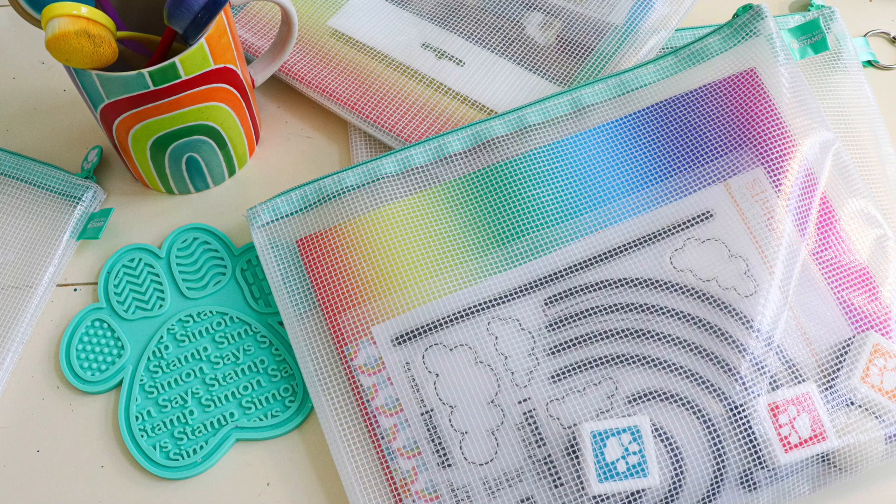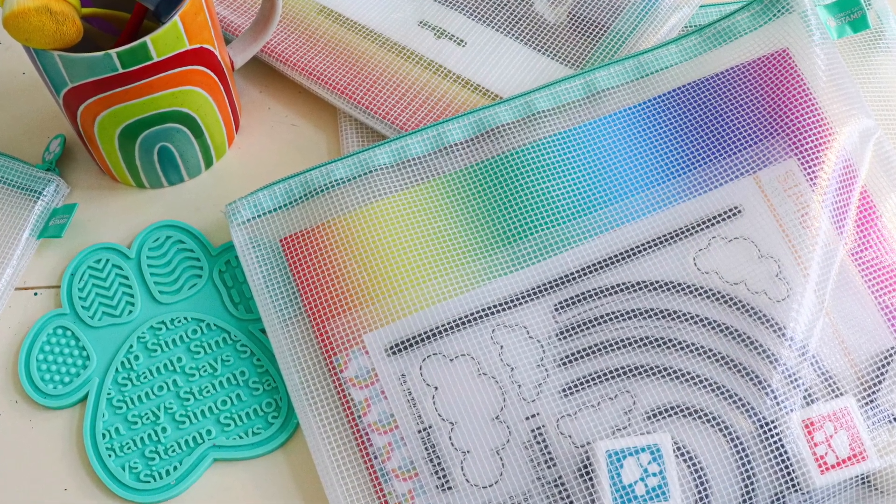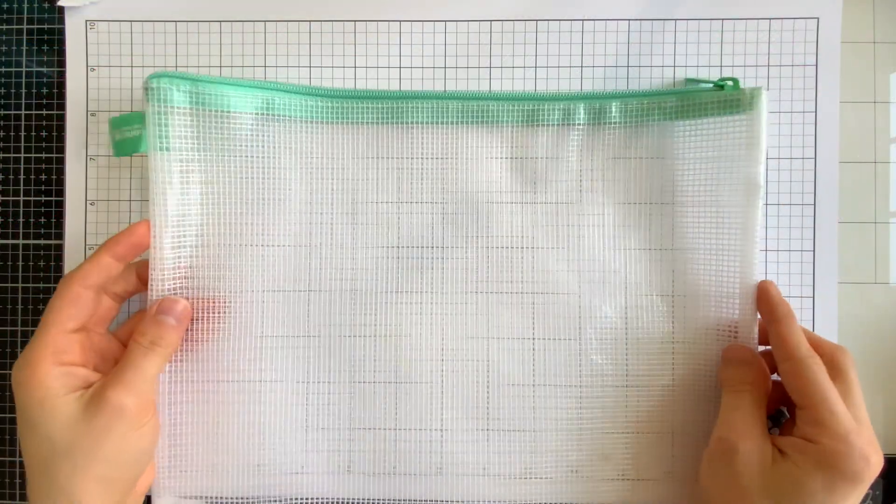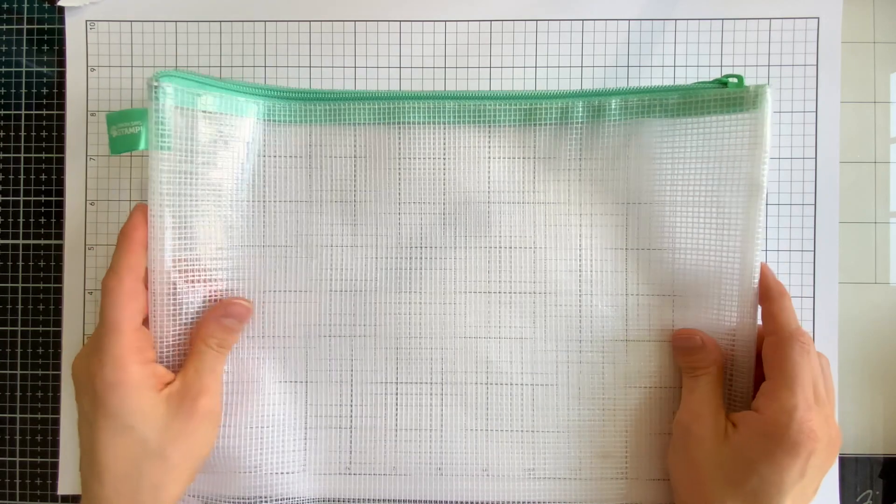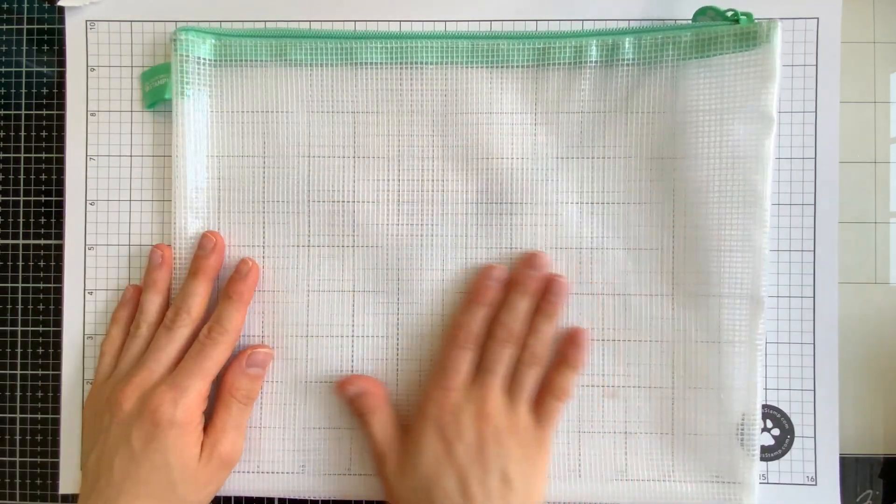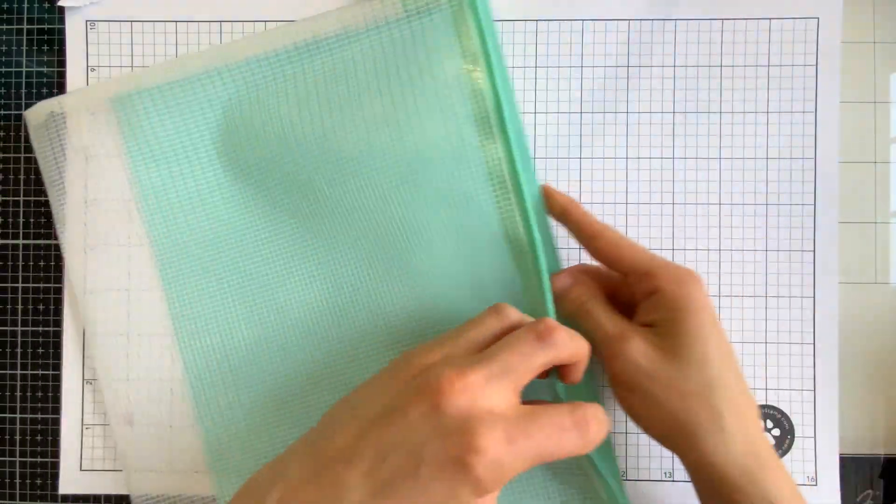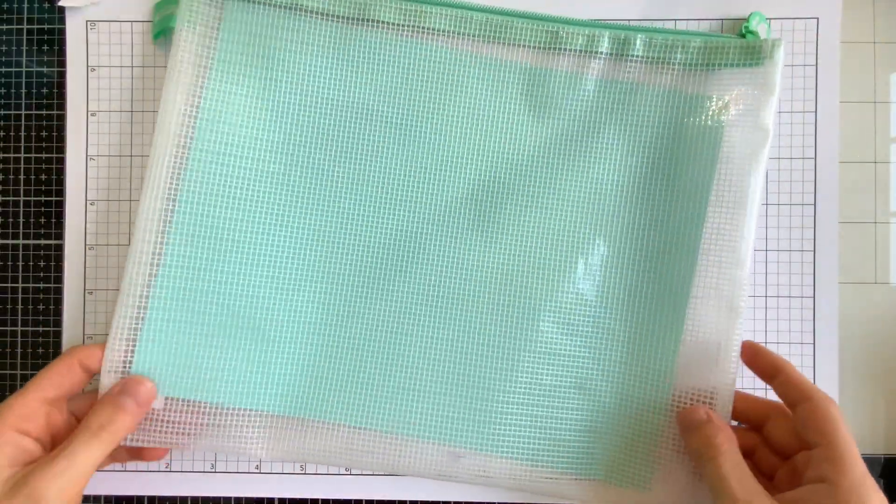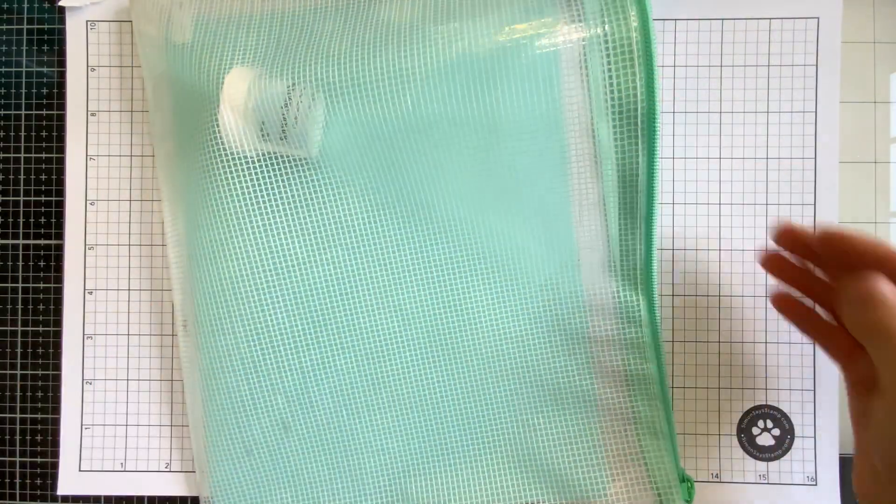Our Simon Says Stamp Mesh Bags are a simple but versatile organizational tool that makes a huge difference in your craft room. The large 10 by 12 and a half inch size gives you plenty of room for holding many of your favorite craft supplies including full size 8 and a half by 11 sheets of paper. The flexible makeup of this bag also gives room for bulkier items such as jars or tools.